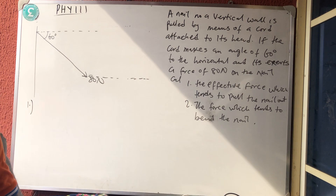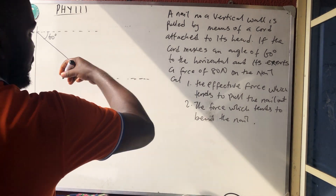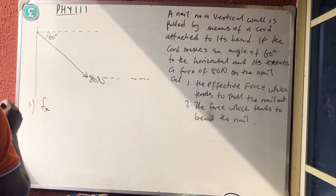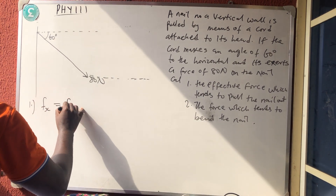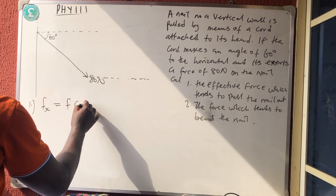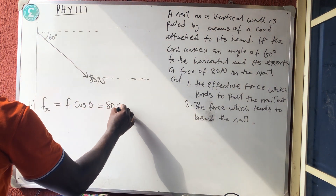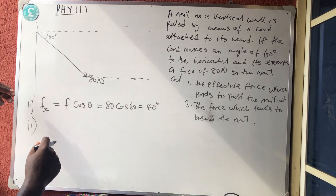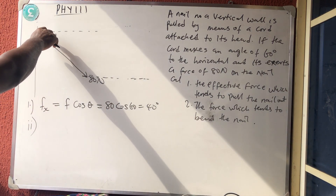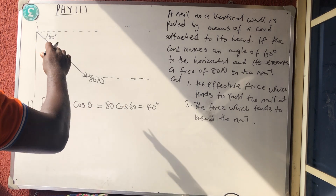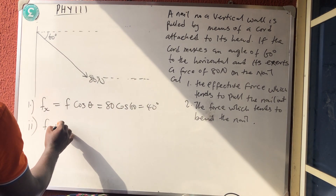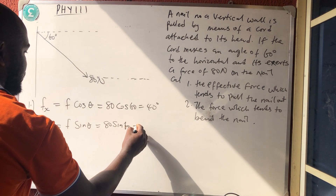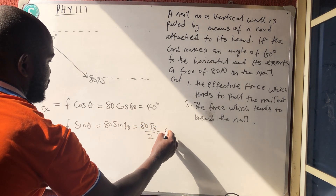The force pulling the nail out is horizontal: Fx = F cos 60° = 80 cos 60° = 40 Newtons. The force bending the nail acts vertically: Fy = F sin 60° = 80 sin 60° = 80 × (√3/2) = 40√3 Newtons.